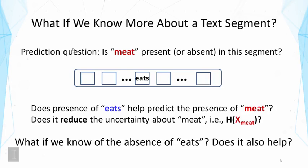If we frame this using entropy, we are interested in knowing whether knowing the presence of 'eats' could reduce uncertainty about 'meat', or reduce the entropy of the random variable corresponding to the presence or absence of 'meat'. We can also ask: what if we know of the absence of 'eats'? Would that also help us predict the presence or absence of 'meat'?